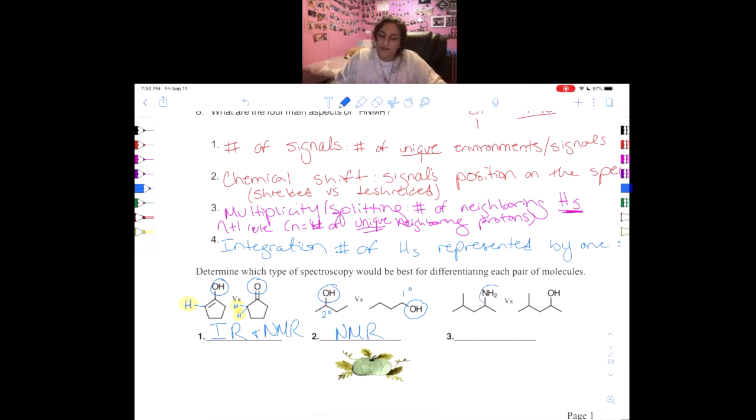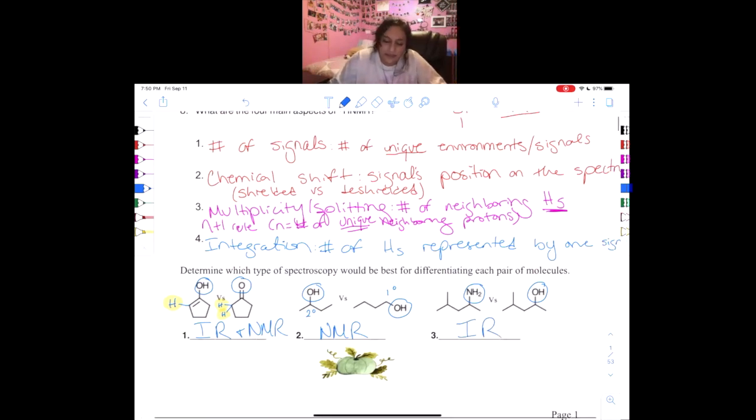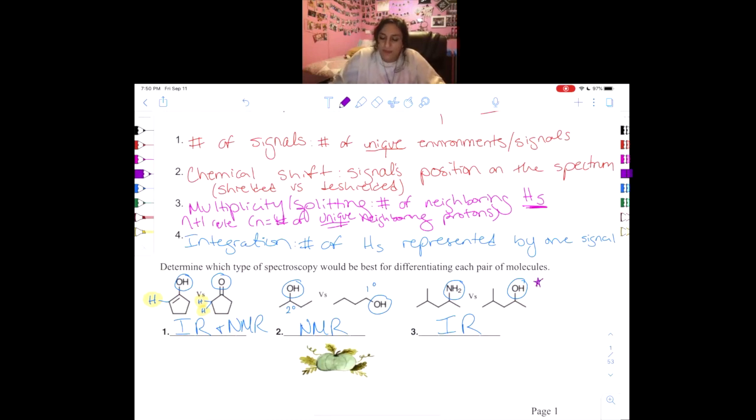The opposite is true for number three, because we have the same exact connectivity and carbon hydrogen skeleton. The only thing that's different is our functional group. So we are going to use IR. And I just want to put a little note here next to this one, because yes, technically there is a difference in these hydrogens. However, it's going to be a very small difference. So in the first example we could use either IR or NMR and it would be equally as efficient. However, here it is very inefficient to use NMR to try and tell the difference between these two. So the only answer is IR.